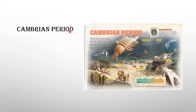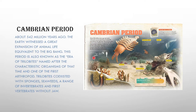The first period was the Cambrian period. About 542 million years ago, the Earth witnessed a great expansion of animal life, equivalent to the Big Bang. The first arthropods came in this era. This era is also known as the era of trilobites, because there were many trilobites, though they don't show in this particular picture.